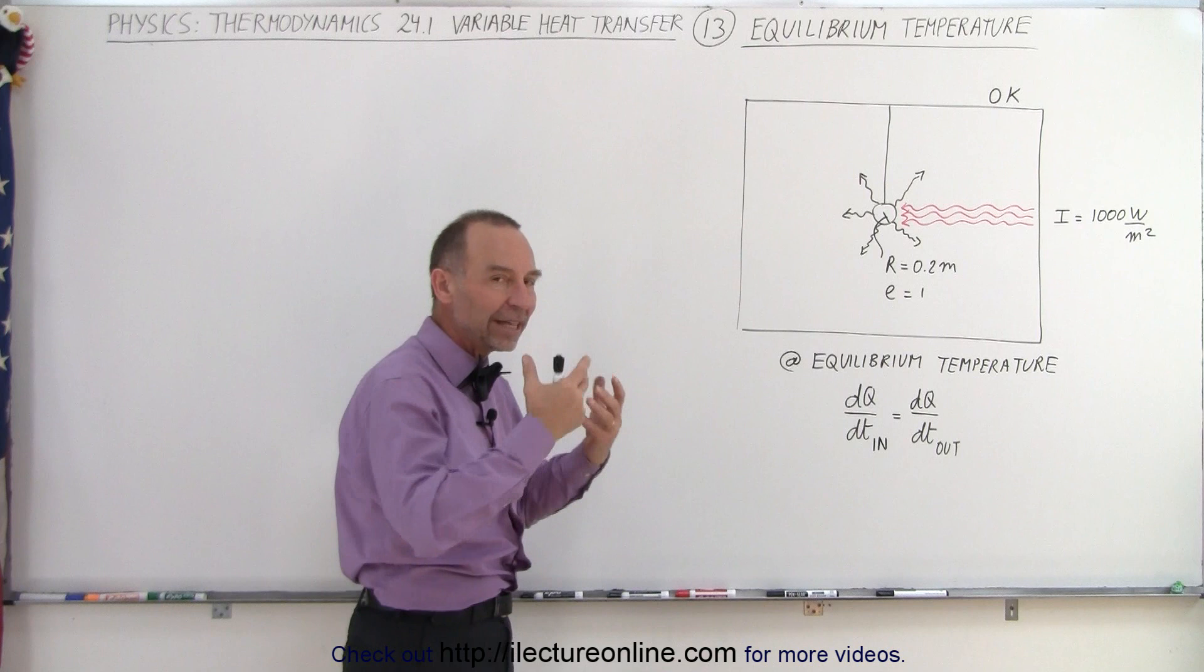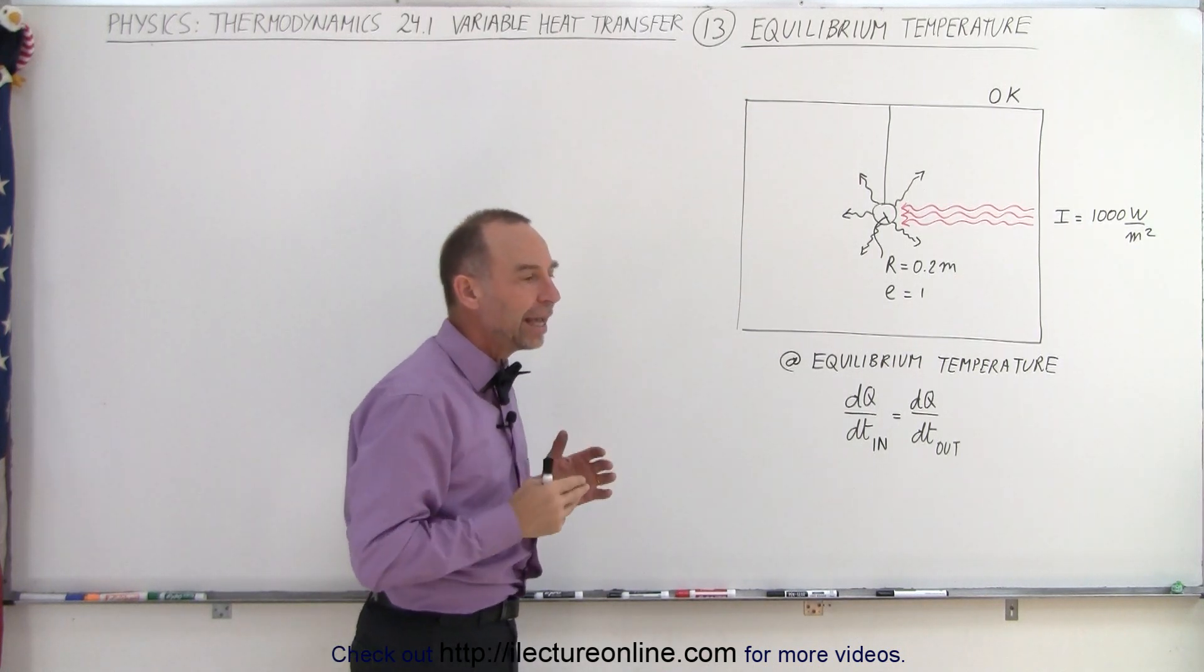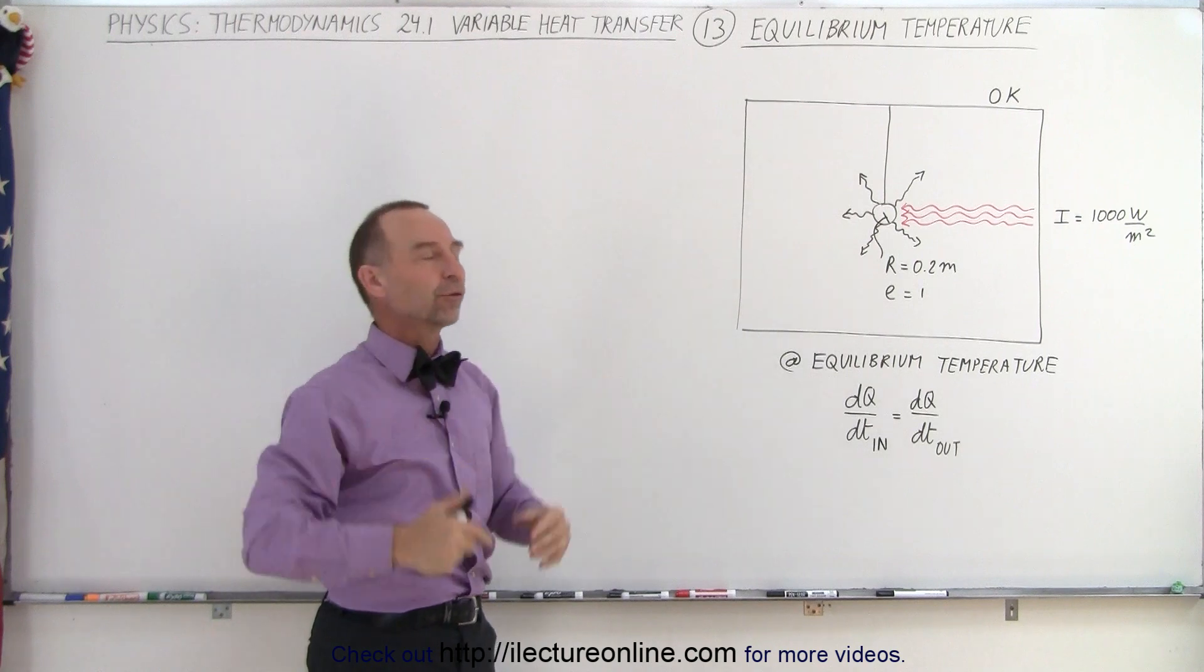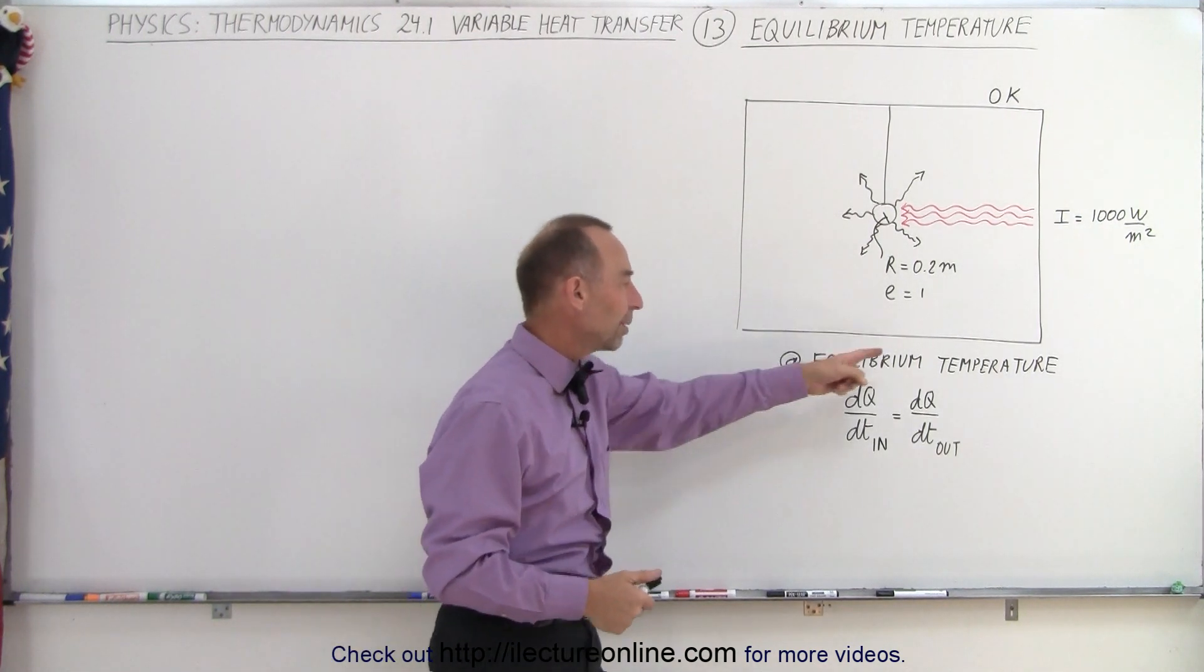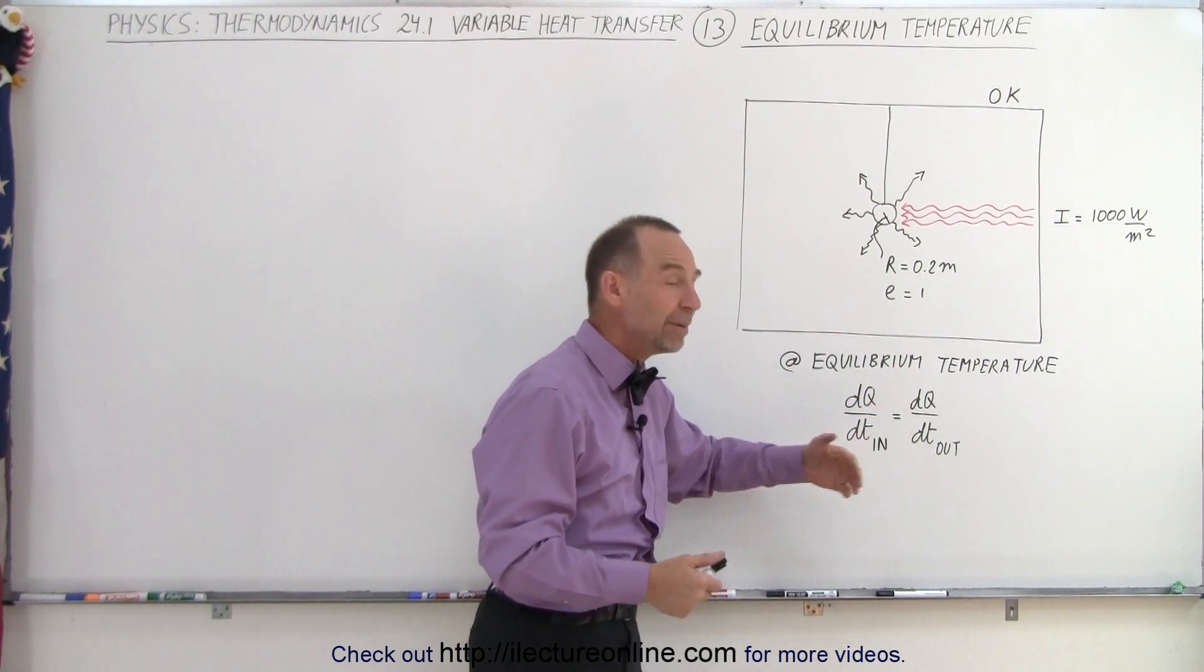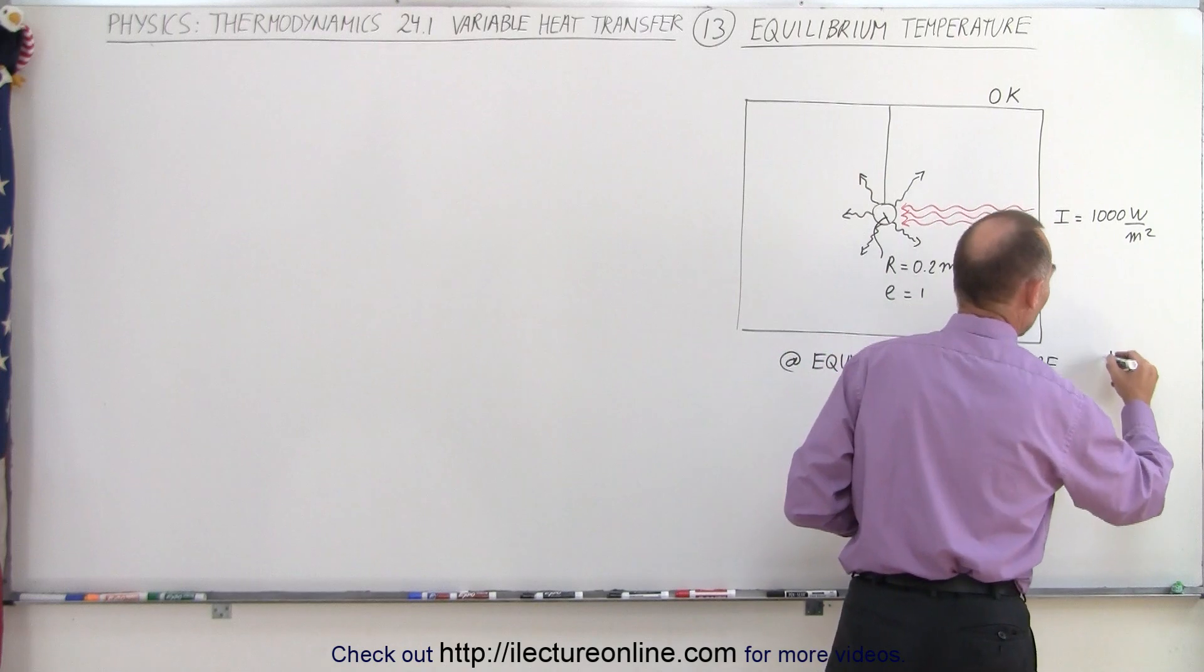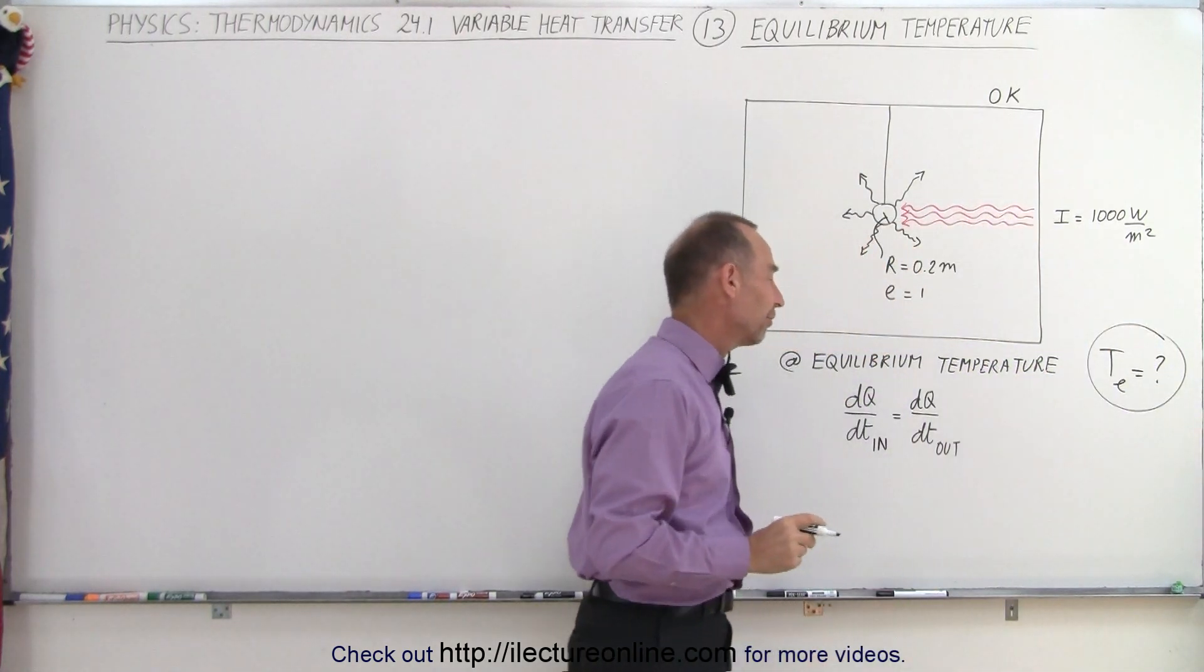As the object receives the heat, it's going to heat up. As it heats up, it's going to radiate more and more energy. At some point, the amount of energy that it receives on the one side of the object is going to equal the radiation it sends out in all directions of space. So at that equilibrium temperature, the dQ/dT coming in from the radiation must equal the dQ/dT being radiated outward. What we're trying to do is find that equilibrium temperature, T sub E.